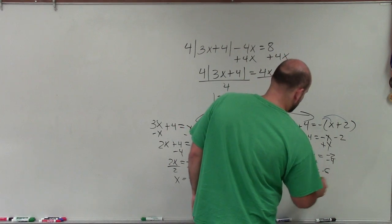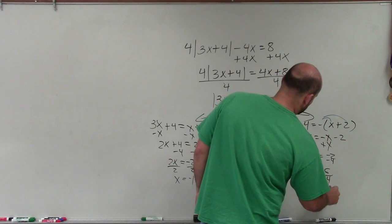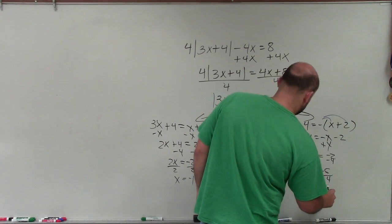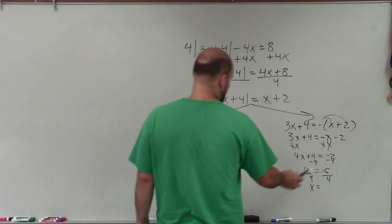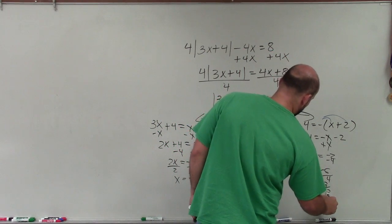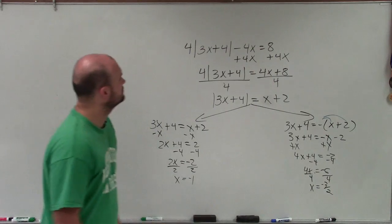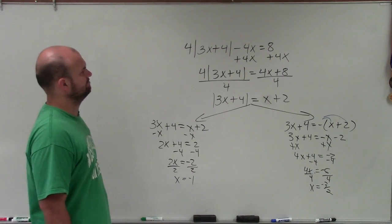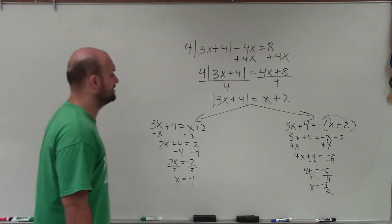Again, subtract 4, subtract 4. 4x equals negative 6, divide by 4, divide by 4. x equals negative 3 halves. All right, well, I guess we'll see where it goes.